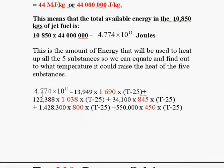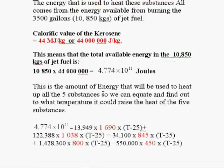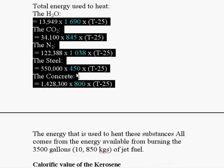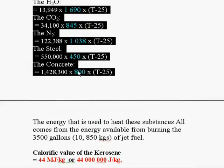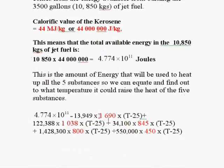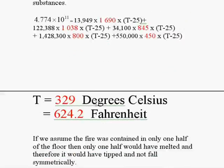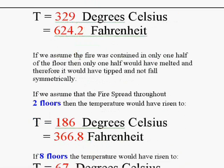So, here we see, 4.774 times 10 to the 11, equals the energy is needed to heat all the five substances, here, add it together, solve for T. It comes out 329 degrees Celsius.